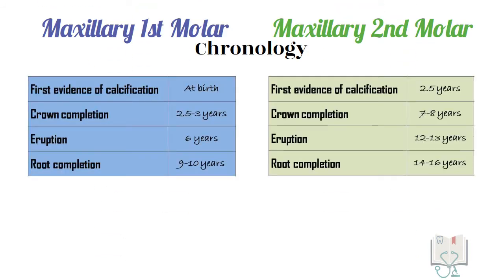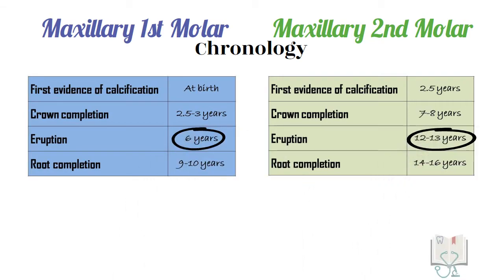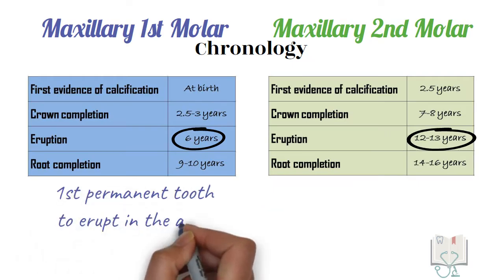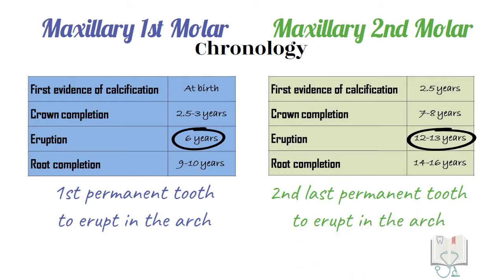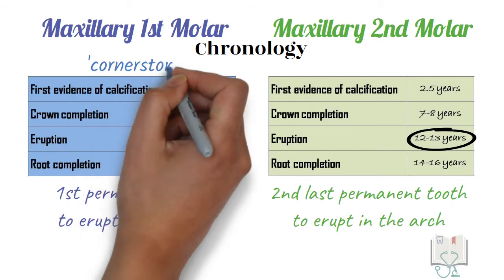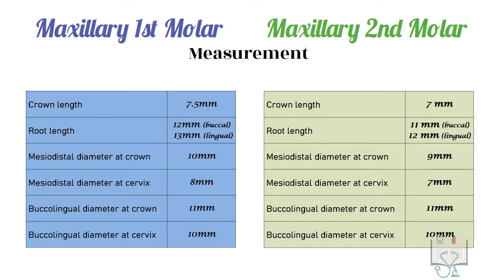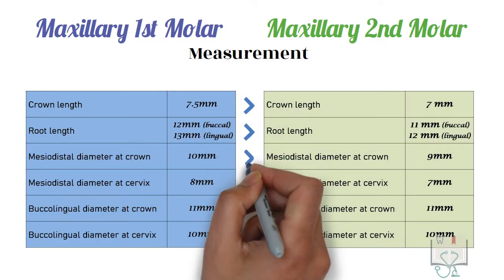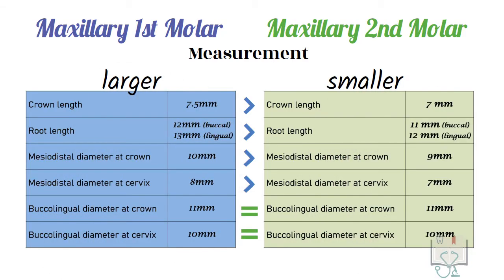Coming to chronology, maxillary first molar erupts at the age of six years and second molar at the age of 12 to 13 years. This makes the first molar the first permanent tooth to erupt in the arch, whereas the second molar is the second last tooth to erupt. Maxillary first molar is commonly called the cornerstone, whereas the second molar is called the 12-year molar. The maxillary first molar is larger than maxillary second molar in all dimensions except the buccolingual dimension, where they are the same.